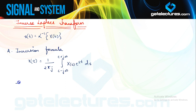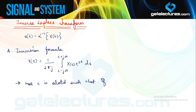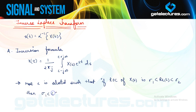In this integral, one thing to notice is that the real number C is selected such that if the ROC of X(s) is from σ₁ to σ₂, then C lies between σ₁ and σ₂. The evaluation of this inverse Laplace transform integral requires an understanding of complex variable theory — this is a completely complicated integral involving integration in complex variables, and generally we are not using this formula.